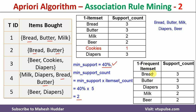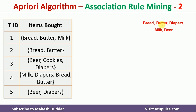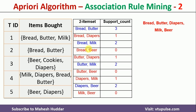Now from the one-frequent itemset, we have 5 unique items, so we need to generate 2-itemsets. The 2-itemset combinations are: bread-butter, bread-diaper, bread-milk, bread-beer, butter-diaper, butter-milk, butter-beer, diaper-milk, diaper-beer, and milk-beer. I have written all those combinations here.